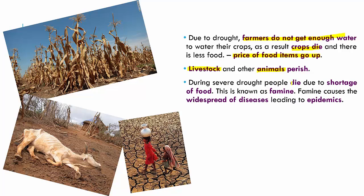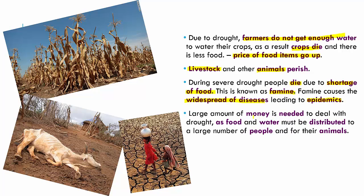During severe drought, ultimately people also die due to shortage of food. This is known as famine. When there is a famine, there is no water to drink and no food to eat, so people die of thirst and starvation. Famine also causes widespread disease, leading to conditions called epidemics. A large amount of money is needed to deal with drought because food and water must be distributed to a large number of people and animals to make sure they survive.